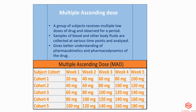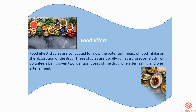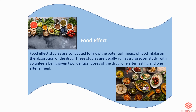The amount of drug increases for each new cohort of subjects. Blood samples are collected from participants at different time points and analyzed for the determination of pharmacokinetics of the drug and its metabolites, providing a better understanding of how the drug is processed by the body. Food effect studies are conducted to know the potential impact of food intake on the absorption of the drug. These studies are usually run as a crossover study, with volunteers being given two identical doses — one after fasting and one after a meal.